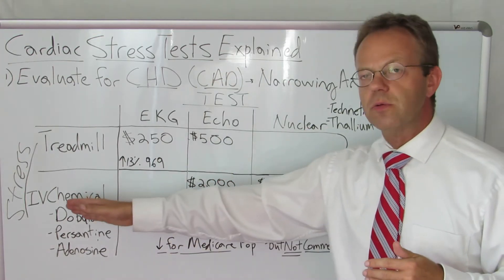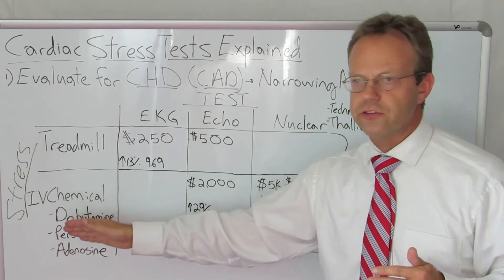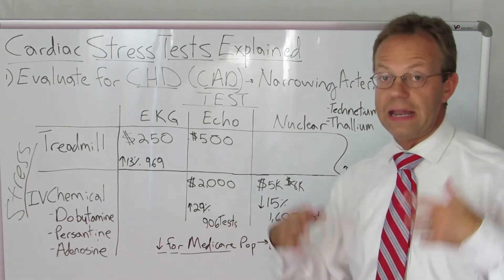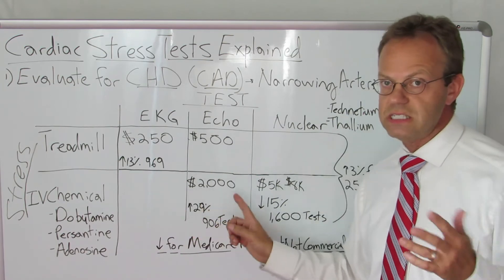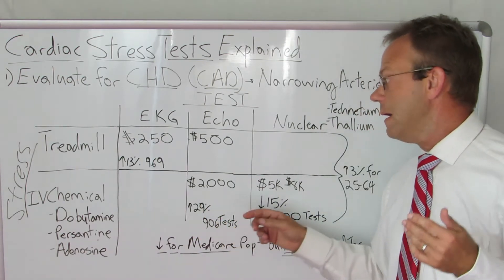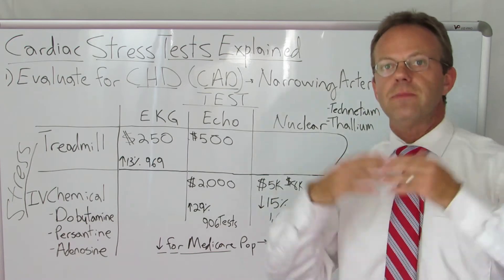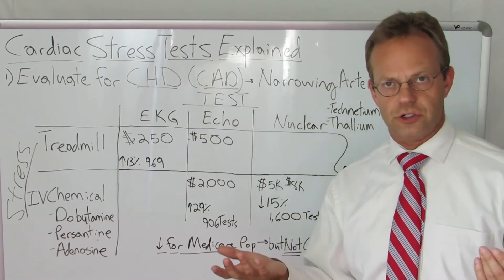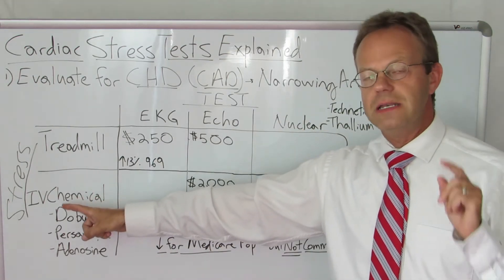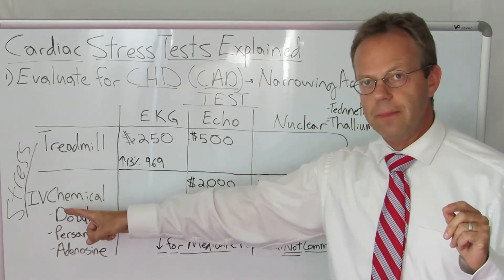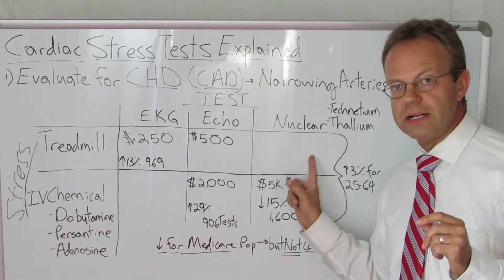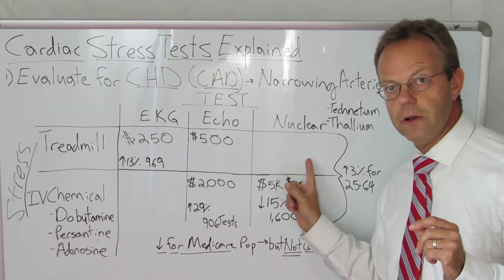A lot of times they'll use the IV chemical stress with the echocardiogram test instead. That is more expensive, tending to run around $1,500 to $2,000. The most common test of all is the nuclear stress test, which is typically done with an IV chemical to stress the heart while also injecting the radioactive material — not on a treadmill.